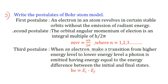The fifth question: write the postulates of the Bohr atom model. The first postulate states that the electron revolves in certain stable orbits without the emission of radiant energy. The second postulate states that the orbital angular momentum of the electron is an integral multiple of h/2π.